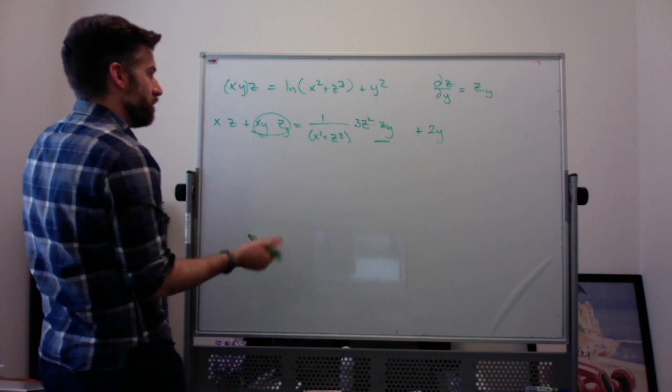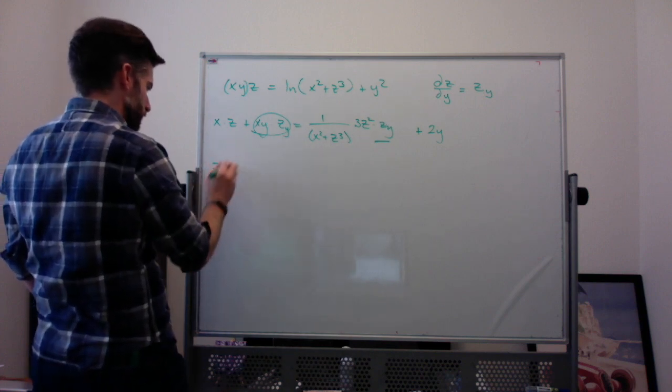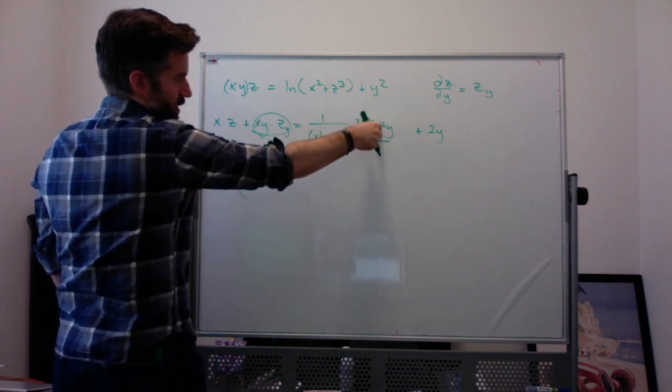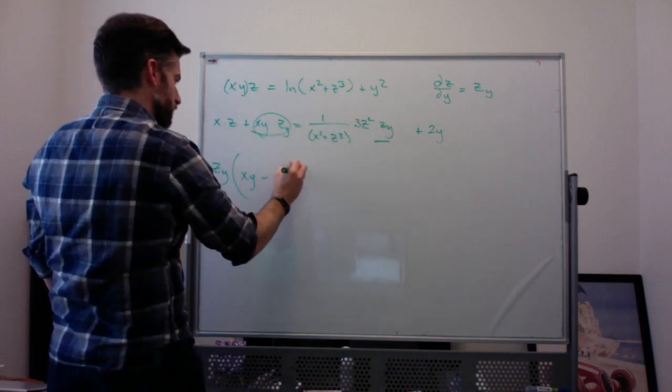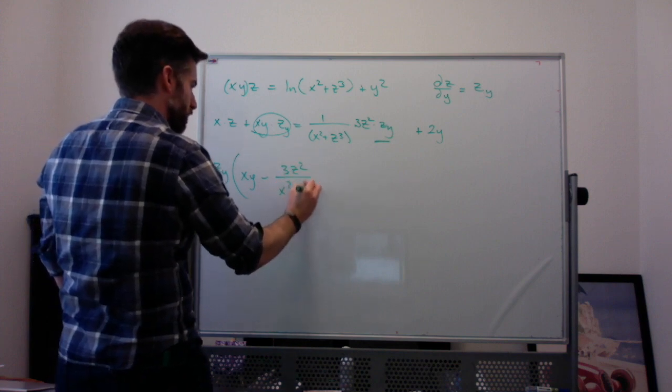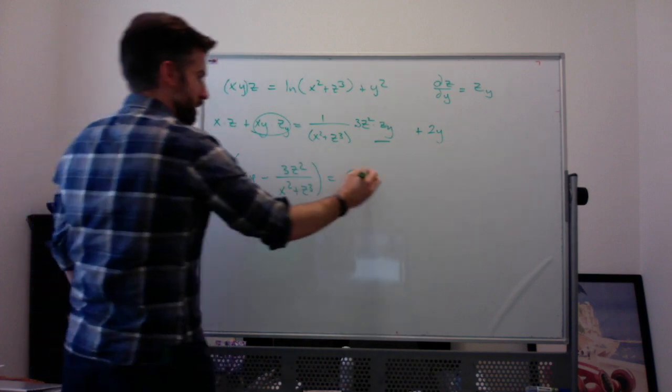So, I can just bring, like, say, I've got zy times xy minus all this without the zy. So, that's 3z² over (x² + z³). Equal to the 2y that's over here minus the xz from over here.